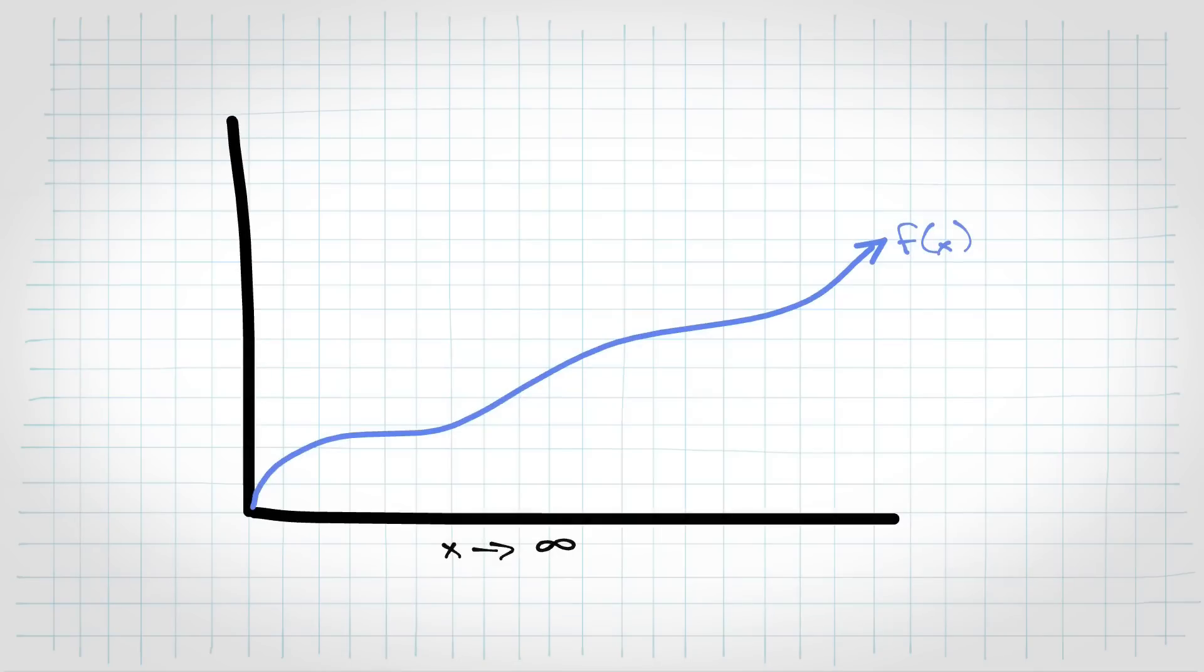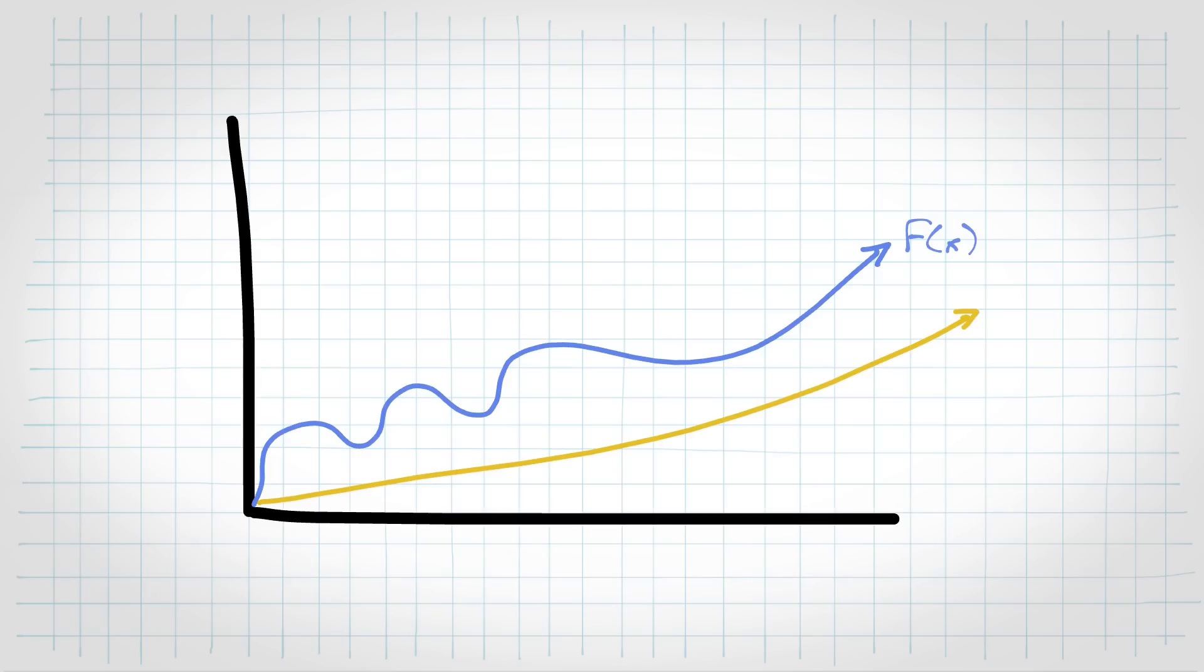Here's a graph of f at x, so it'll just kind of do some crap here and then head up. And then let's add a second function here called g at x. So what that complicated definition is saying is that if there's some point on this graph where g at x times any constant is higher than f at x, and it stays higher after that, then f at x is order g at x.